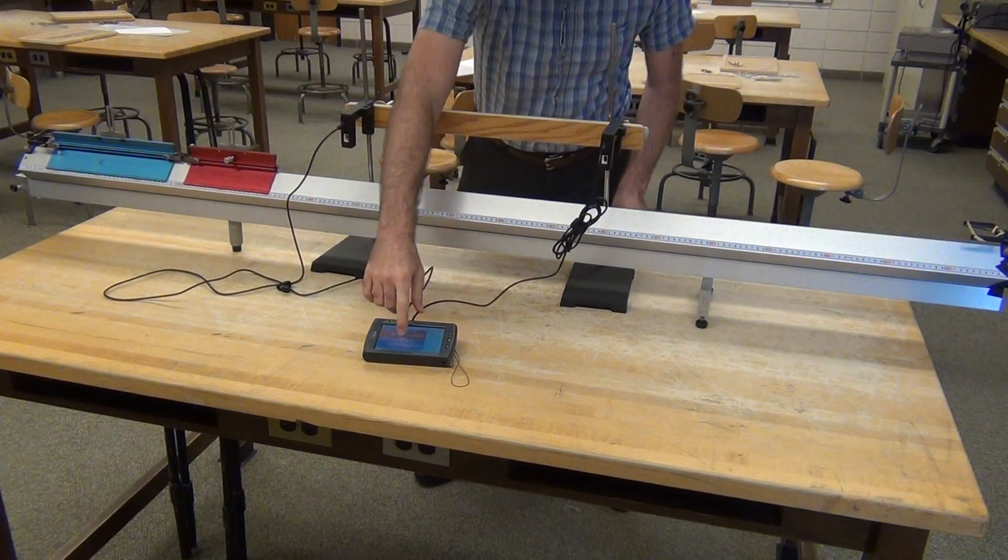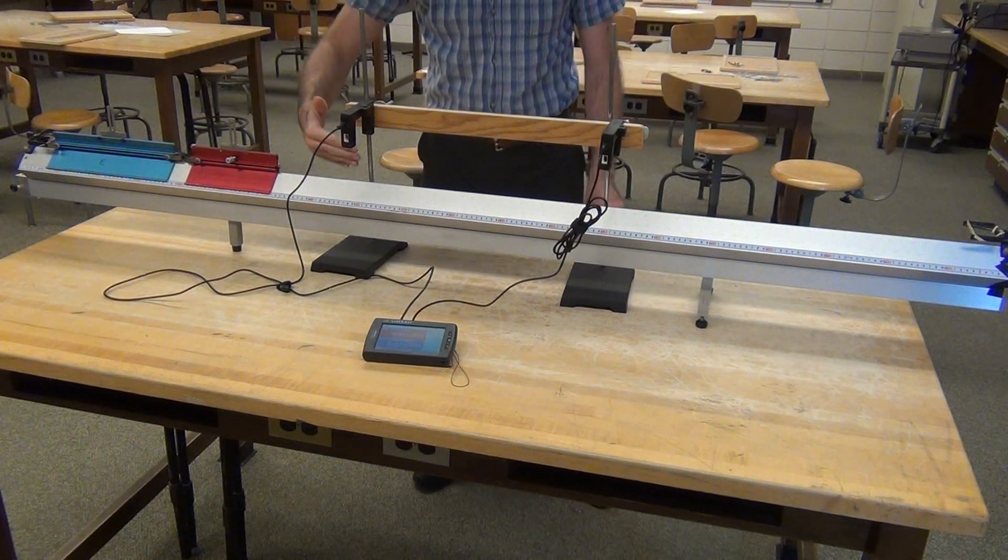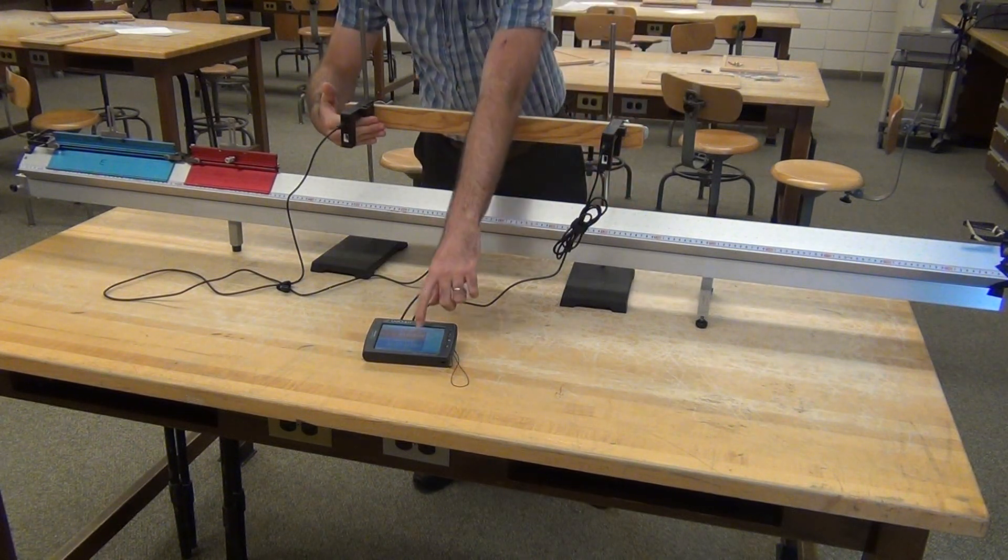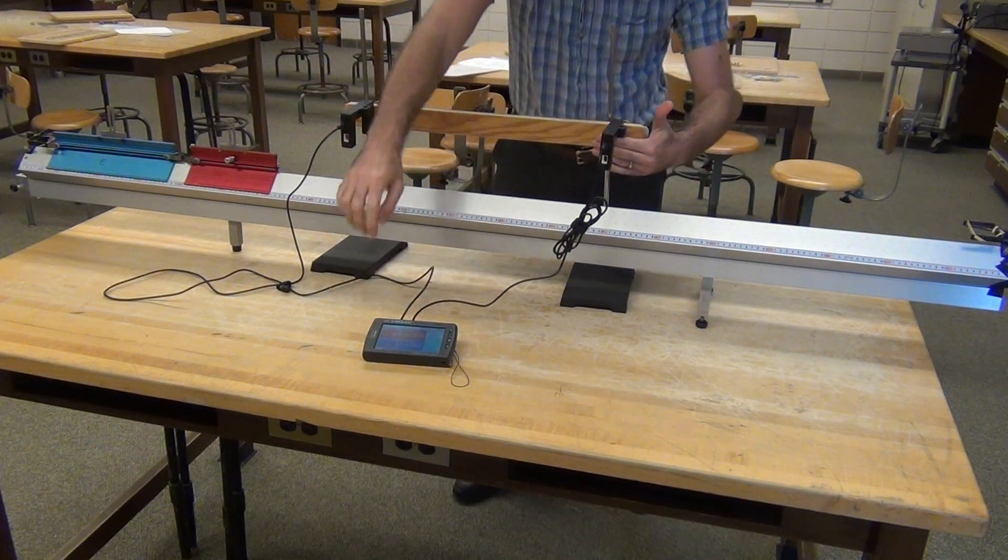Make sure you know which photo gate is which. We have gate 1, gate 2. You want to go through gate 1 first. You can manually block that with your hand. Make sure that it identifies as blocked. Gate 2, blocked.